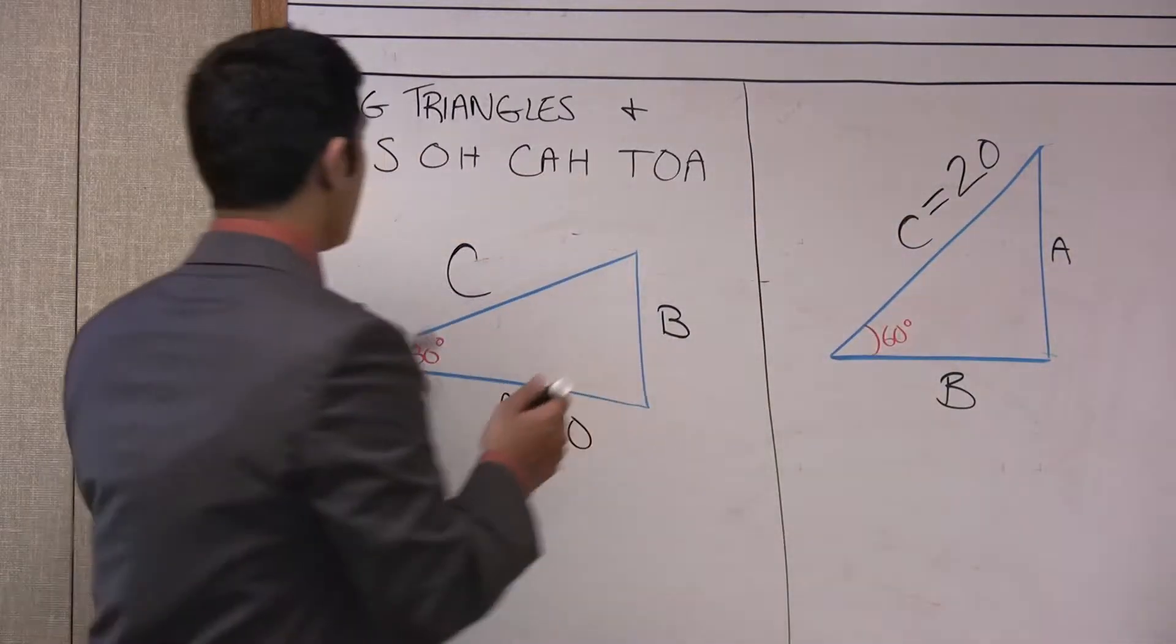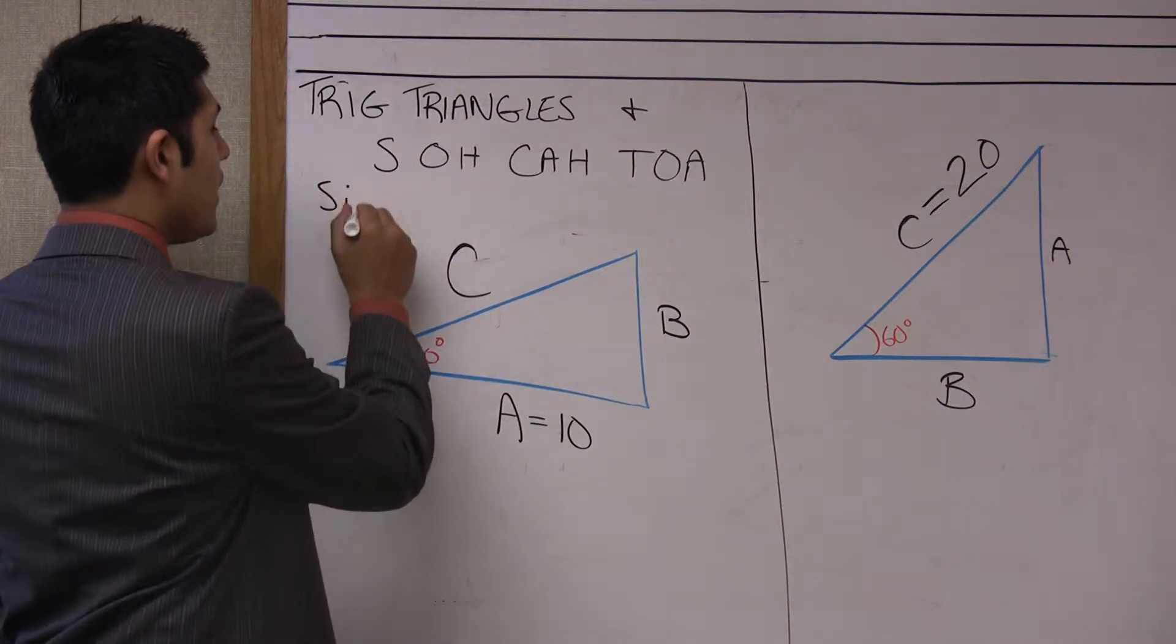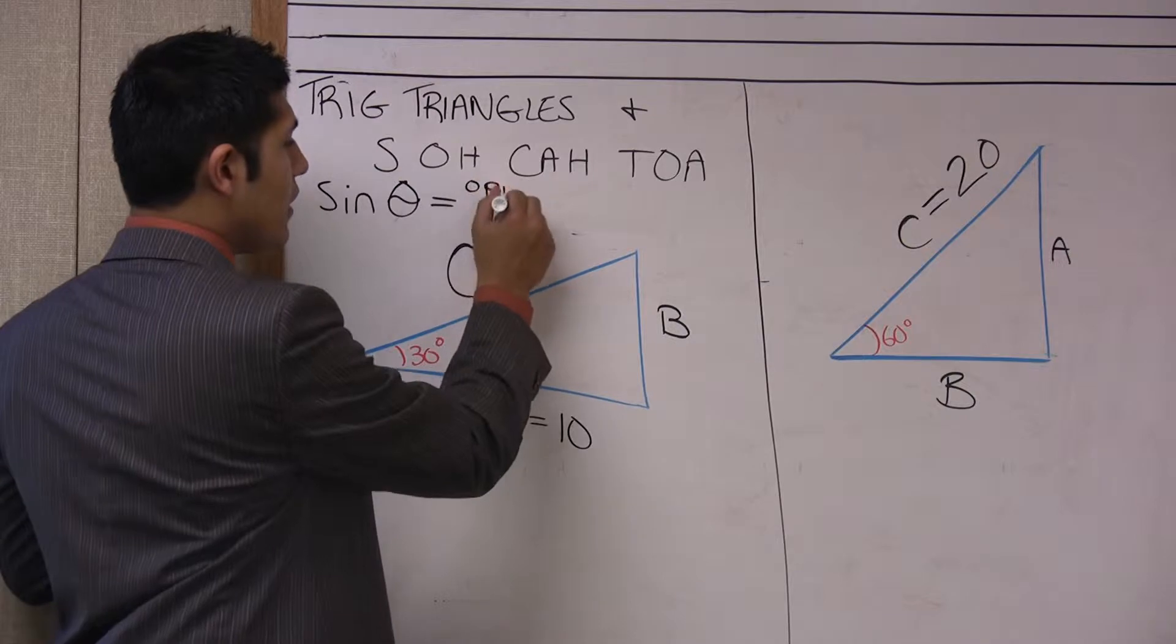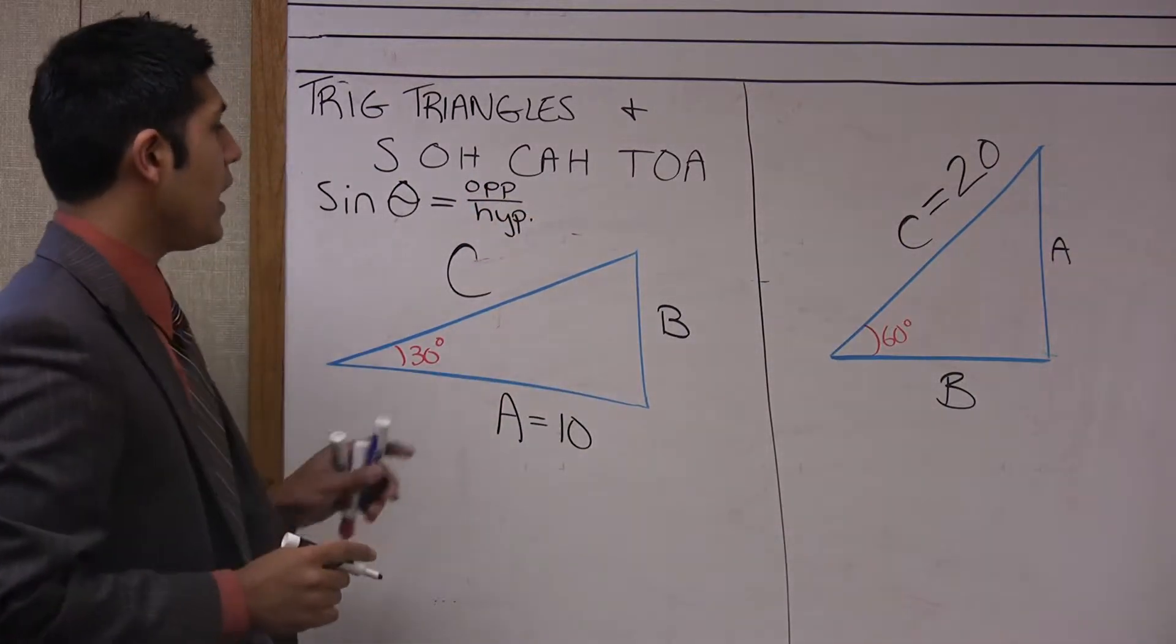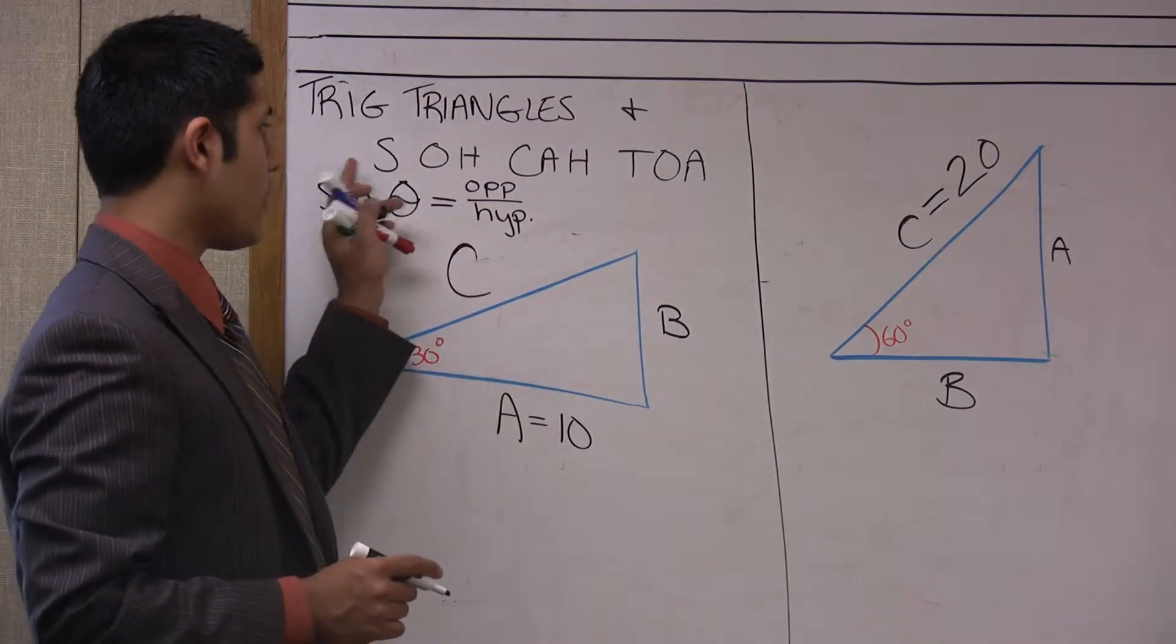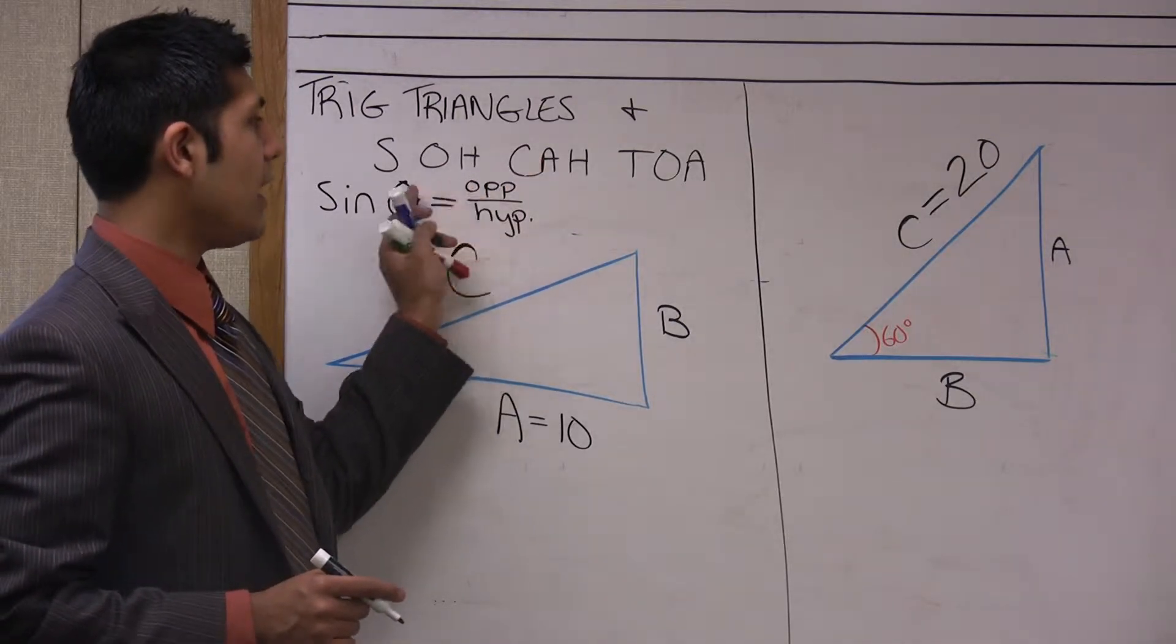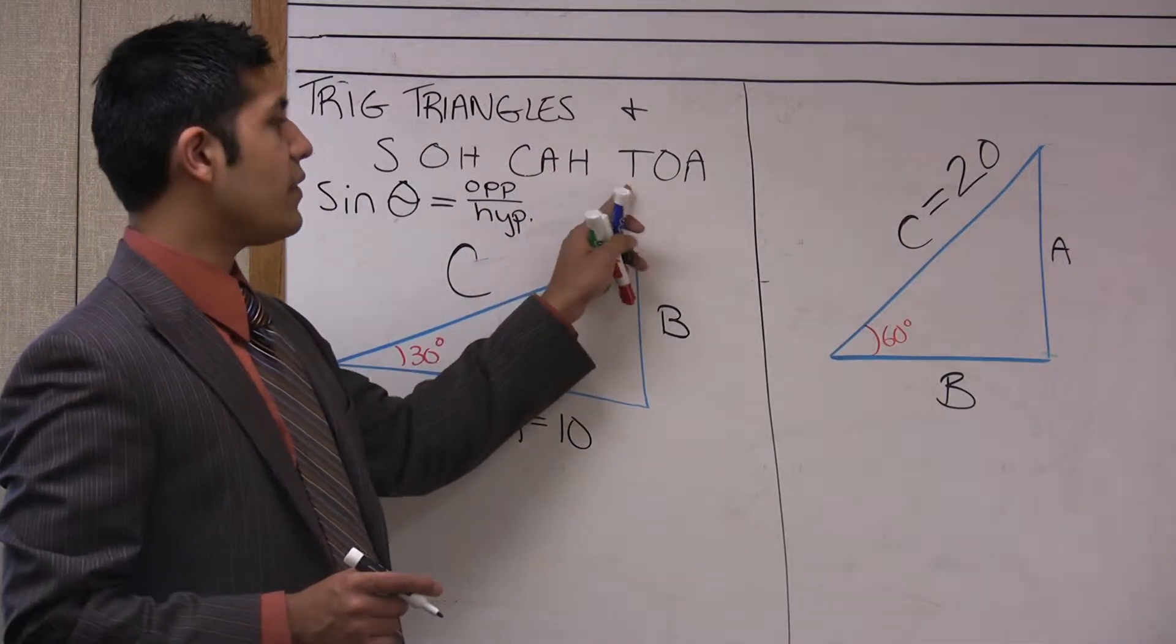SOH stands for sine of some angle theta equals the ratio of the opposite over the hypotenuse. You can extrapolate this to mean for each of these other functions as well. So sine theta equals opposite over hypotenuse, cosine theta equals adjacent over hypotenuse, and tangent theta equals opposite over adjacent.